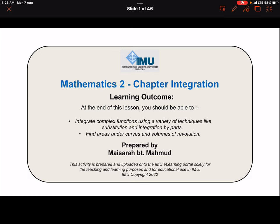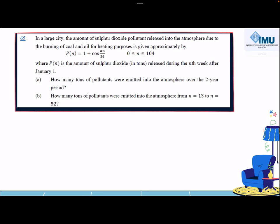Mathematik 2 Chapter Integration Tutorial Question 65. In a large city, the amount of sulphur dioxide pollutant released into the atmosphere due to the burning of coal and oil for heating purposes is given approximately by the below function.